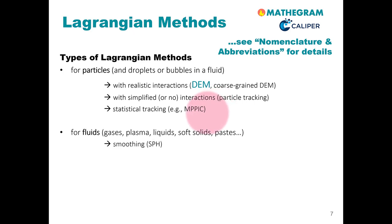The second big type of Lagrangian methods is used for modeling fluid flow. A fluid can be a gas, a plasma, a liquid, a soft solid, or a paste, for example. The first important subtype of these methods is the so-called smoothed particle hydrodynamics method. Here we smooth or average over surrounding discrete elements to calculate the fluid motion.